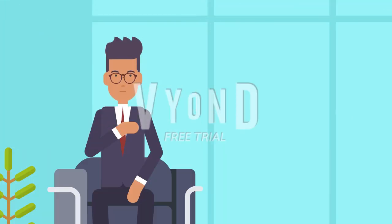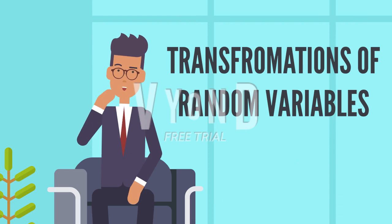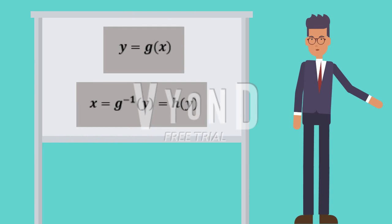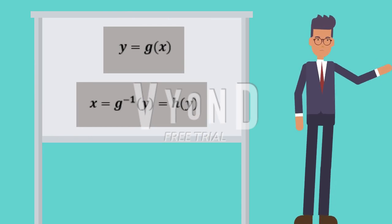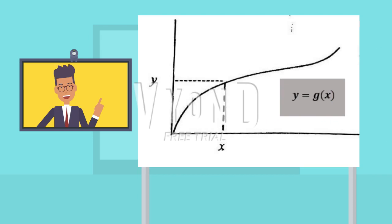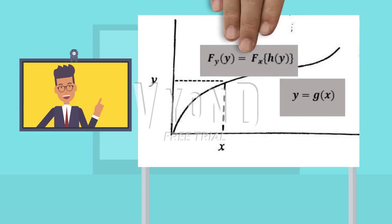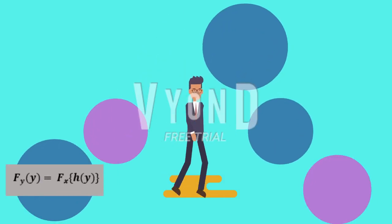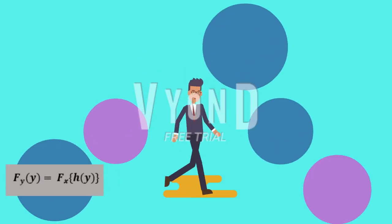For the last subtopic, I will explain about the transformations of random variables. Let y equals g(x) be a function of x such that the inverse function is as shown. As shown in the diagram, let y equals g(x) be a strictly increasing function. Since g(x) is increasing, if X is less than or equal to x, it follows that Y is less than or equal to the unique value of y. So the probability of these events are equal, giving us the equation shown. From this equation, we can derive the relationship for the SDF, PDF, and the HRF as well.